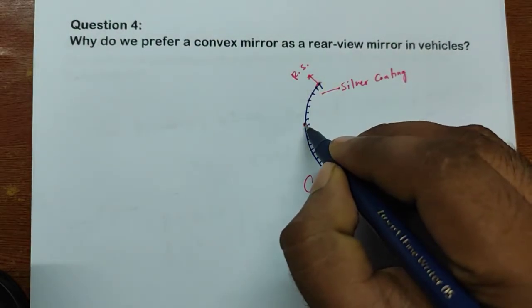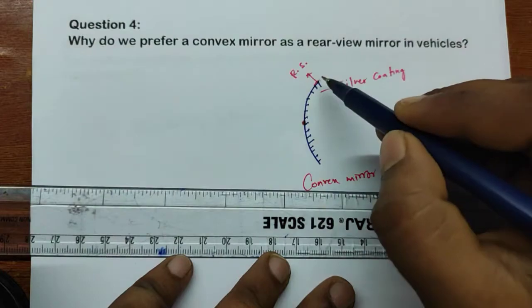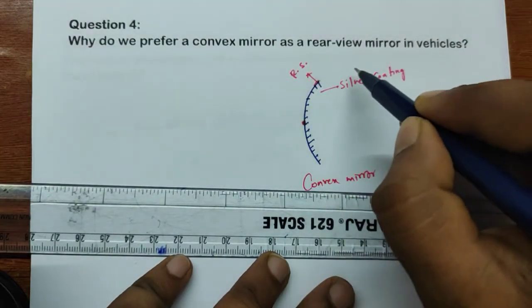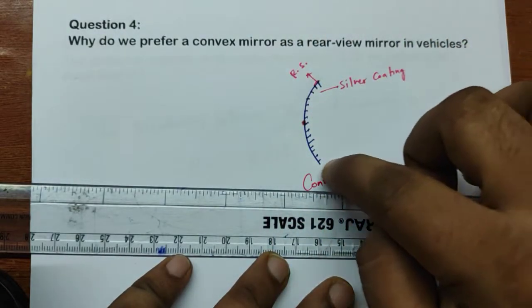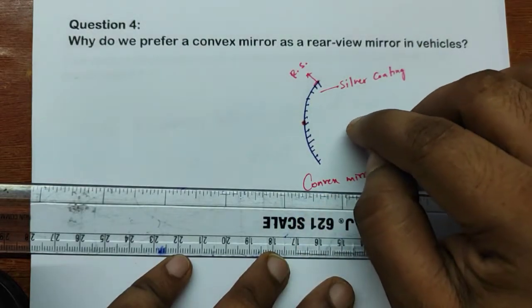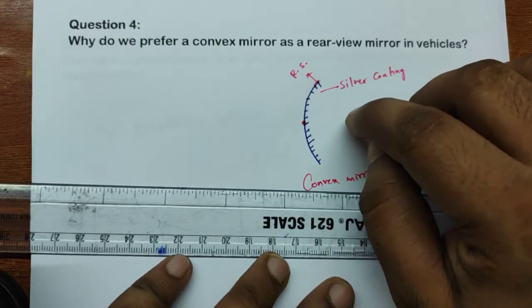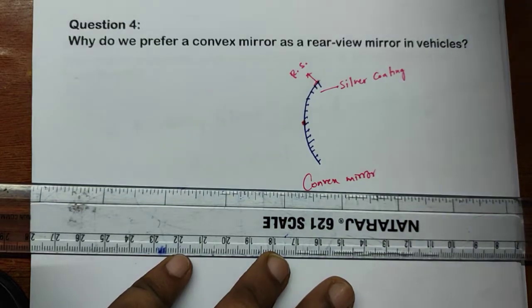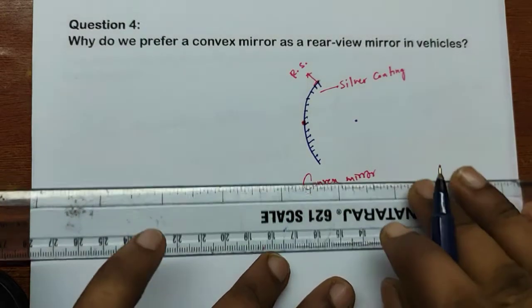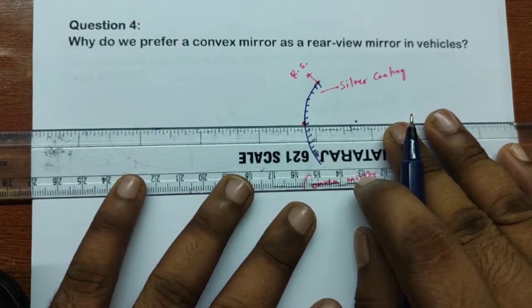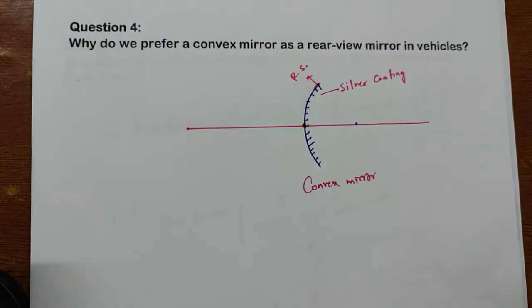The centre of the mirror we call the pole. This is a spherical mirror, so if you extend this mirror it forms a sphere — a ball-type structure. That ball has a centre, which in the mirror we call the centre of curvature. The line passing through the centre of curvature and the pole we call the principal axis.